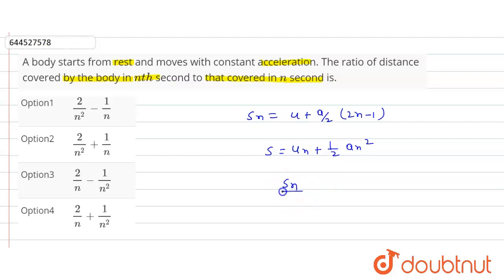Then Sn by s is equal to how much? This will be a by 2 into 2n minus 1 upon 1 by 2 into an square, because u is 0 here.